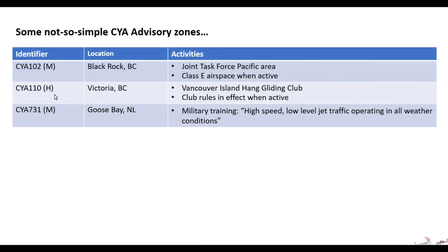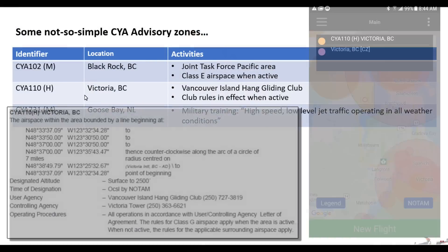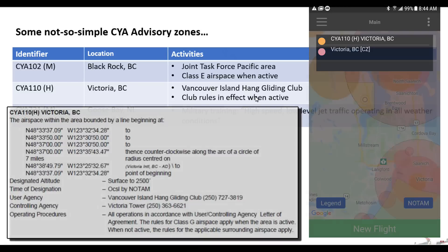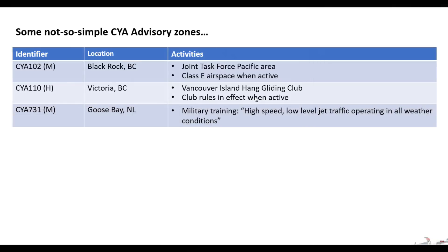The second exception is also near Victoria. It's CYA 110, where the H indicates hang gliding — this is the Vancouver Island Hang Gliding Club. They have special club rules in effect when the club is active, and again there's a phone number to call for that one.